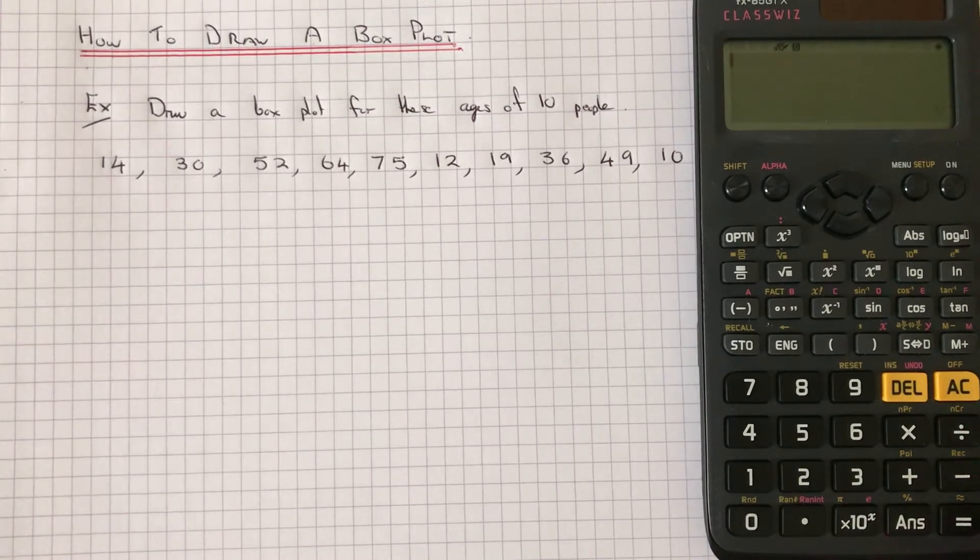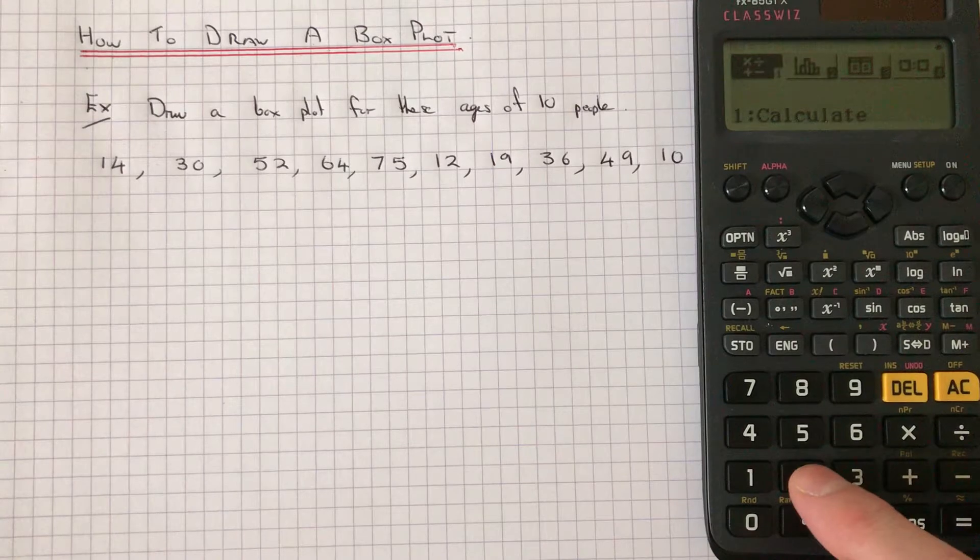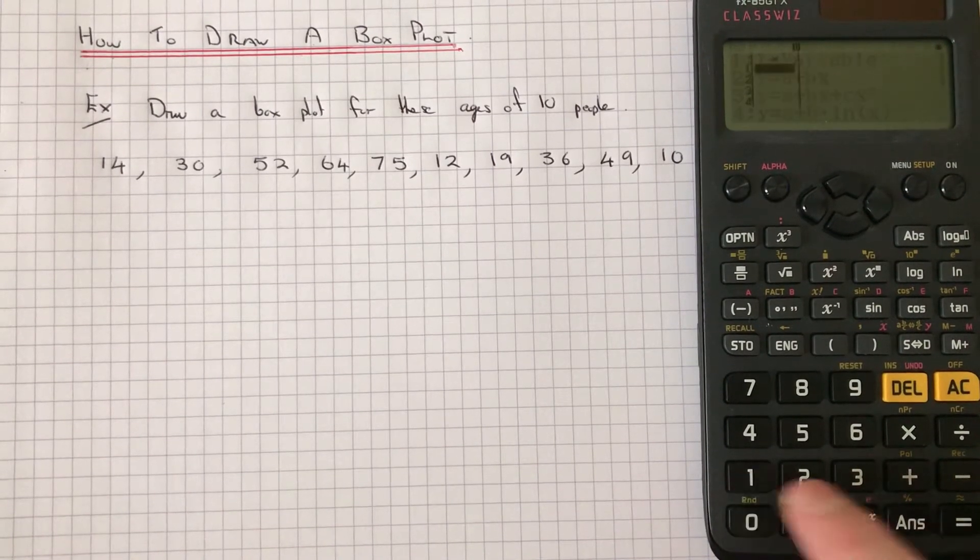Okay, so first of all, put your calculator into statistics mode. So that is menu number 2 and select one variable data.